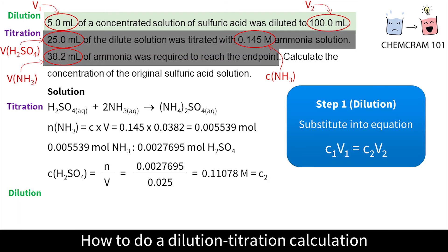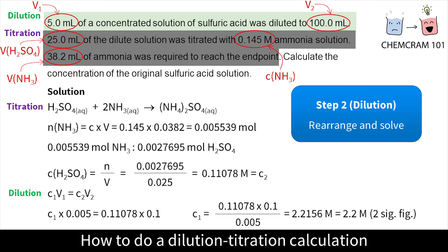Let's solve the dilution. C1V1 equals C2V2. We ignore all the numbers in the titration part when we're solving the dilution. Sub in the numbers — we get C2, the concentration of the diluted solution, from the titration calculation. Now we can solve for C1 and we're done. Don't forget sig figs and units.